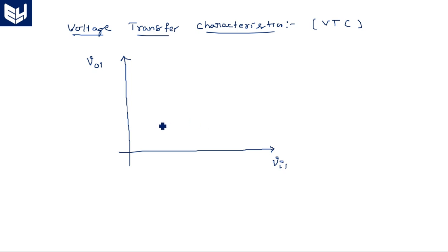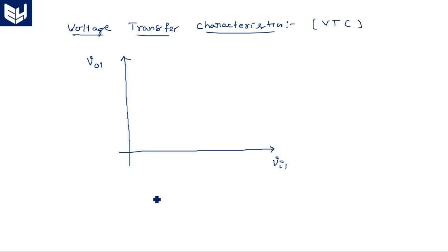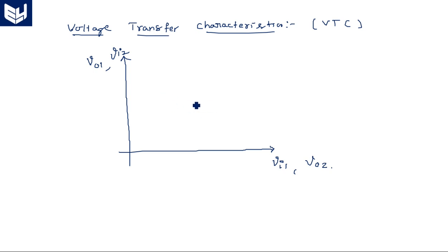For the second inverter, the input is VI2 and the output is VO2. One inverter is taken in the conventional way, and the other inverter is taken in reverse order, so that VO2 is plotted appropriately and we can observe the meeting points of the characteristic curves.